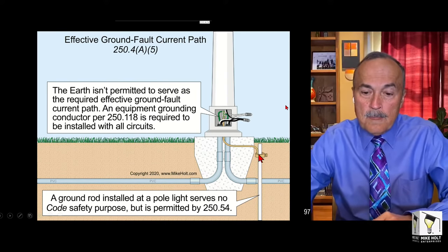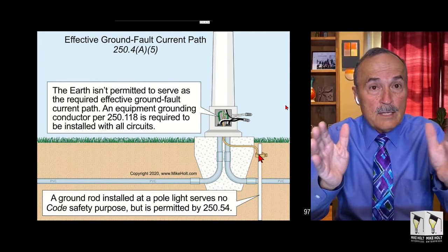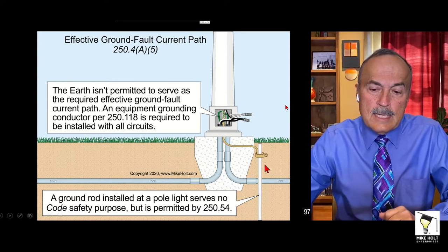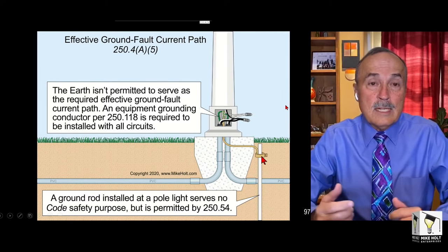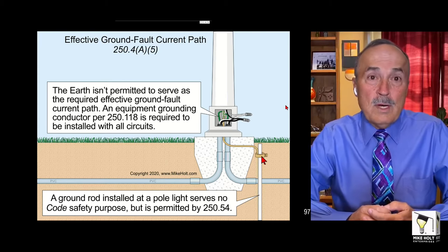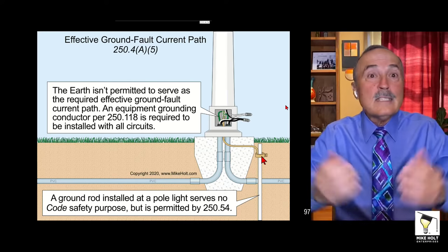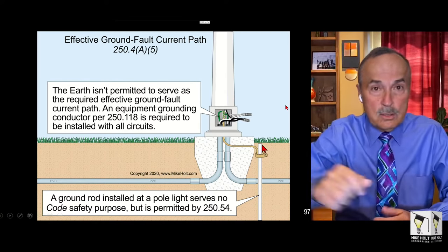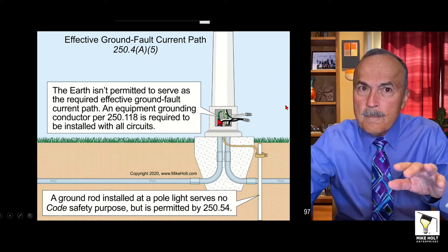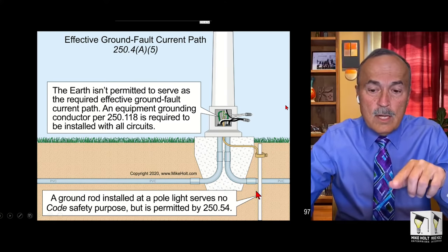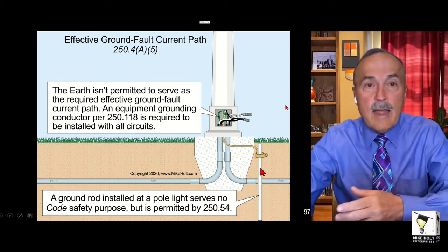The code says about that auxiliary electrode: you don't have to bond it in accordance with 250-50 (bonding all electrodes together). And it says it doesn't matter what the resistance is of that electrode - it could be 1,000 ohms or 100 ohms. You could drive a 16-penny nail if you want for your electrode. You can take an 8-foot or 10-foot ground rod, cut it in thirds or half - it doesn't matter. The code doesn't even care what size wire you run to the auxiliary electrode - all covered in 250-54.